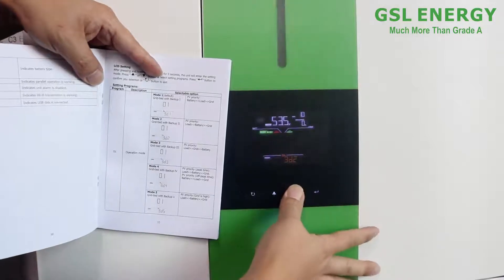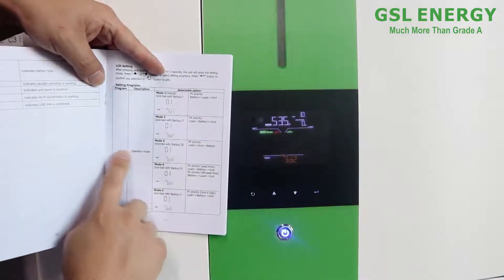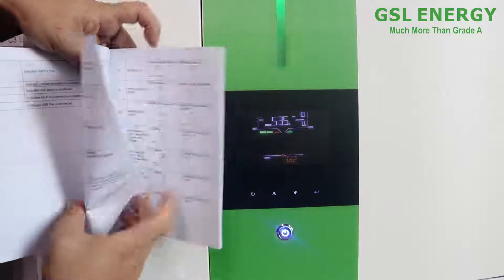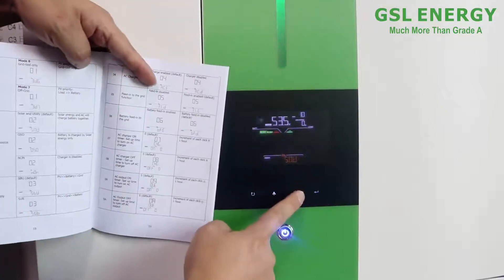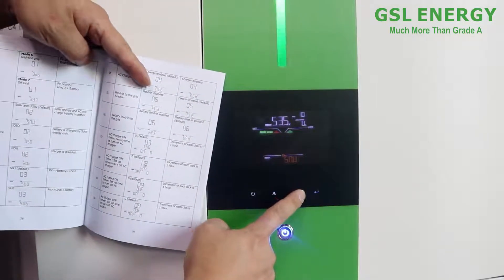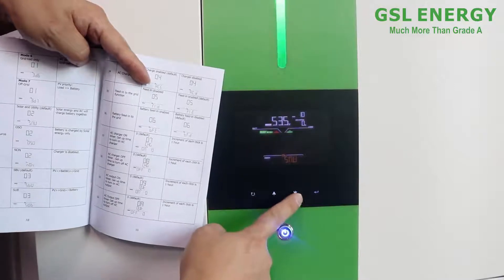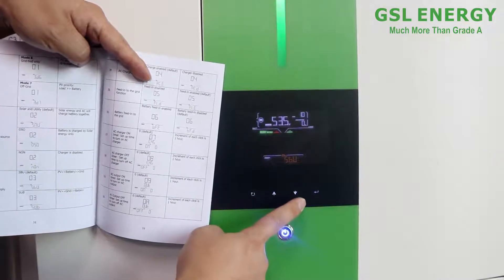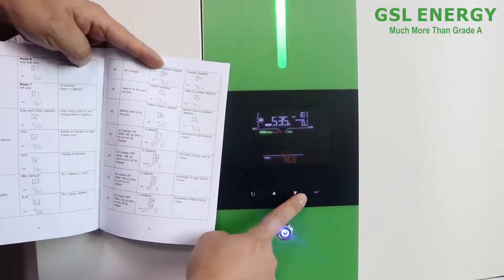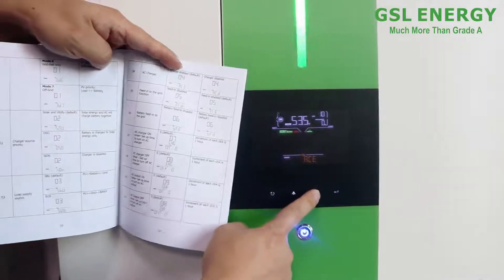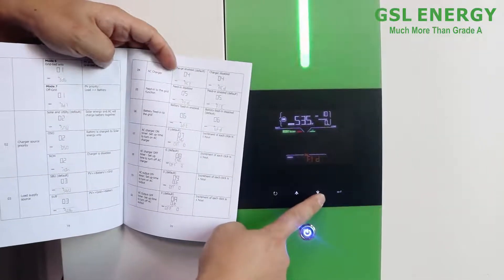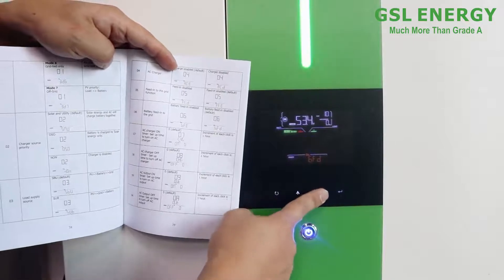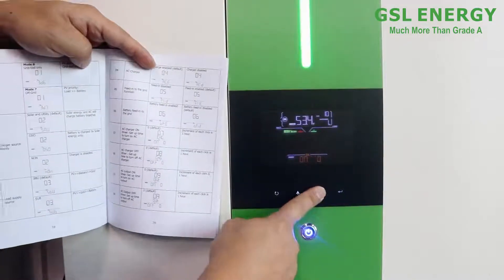Number one, we can see the operation model. And the number two is the charge source property. And the number three is the load supply source. Number four is AC charge the current set. Number five is feeding into grid function. Number six and number seven.